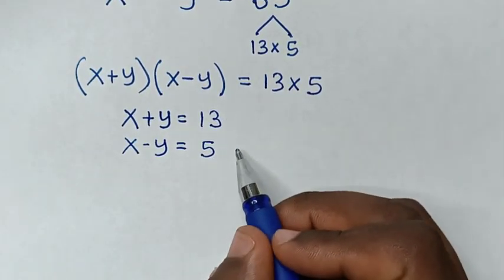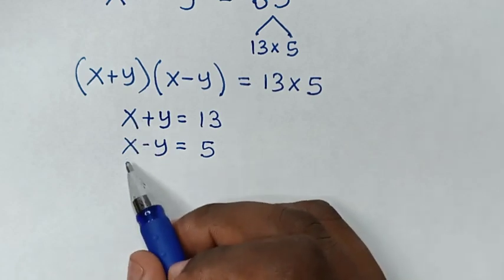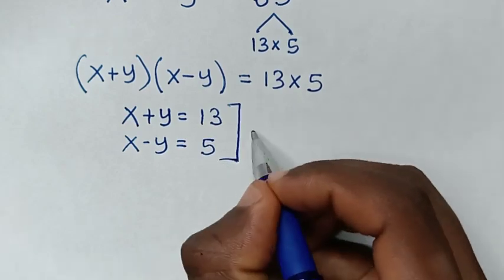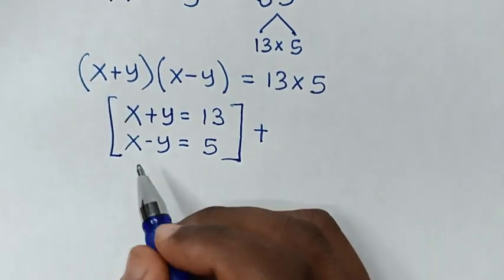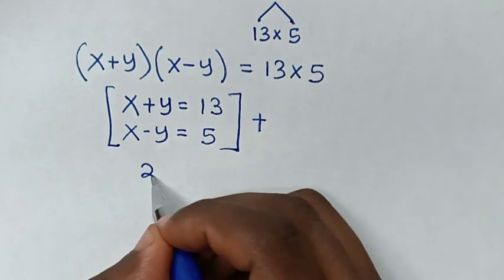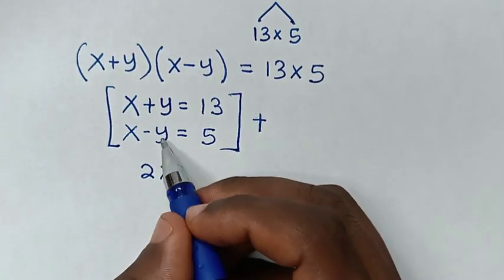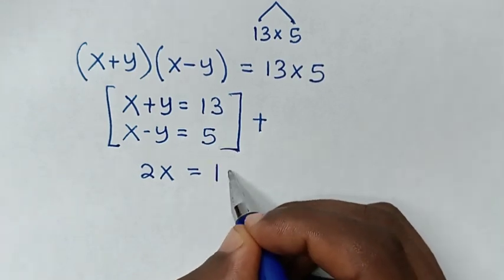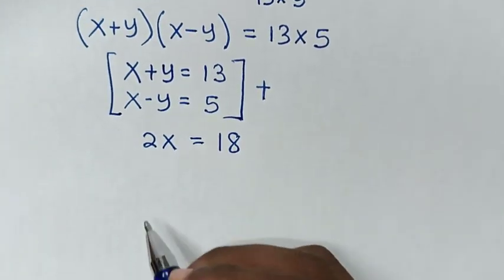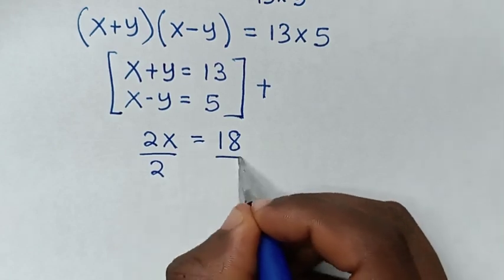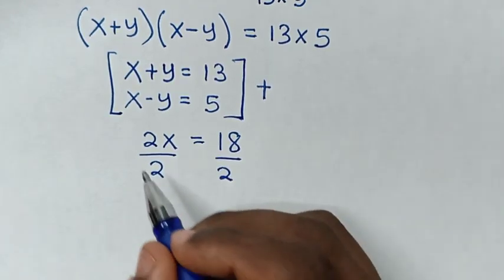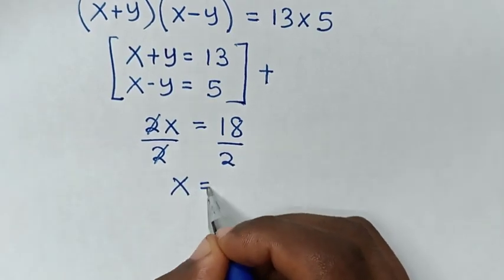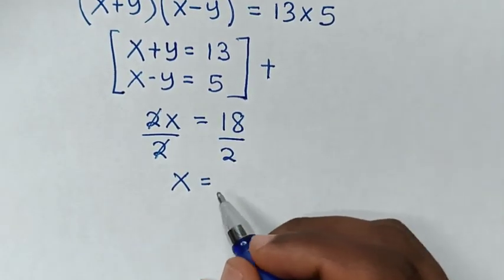Now from these two equations we find the value of x. We add the two equations together. Then x plus x is 2x, y minus y is 0, so it equals 13 plus 5, which is 18. Then in the next step, we divide by 2 on both sides. This two and this two cancel, so x is equal to 18 divided by 2, which is 9.